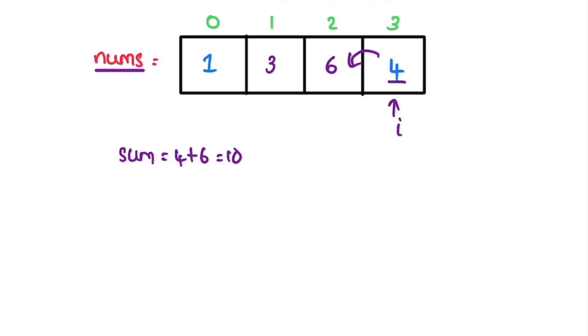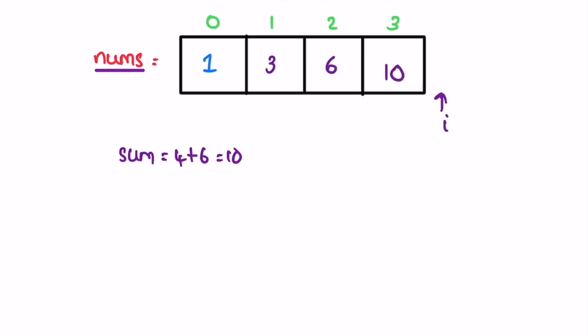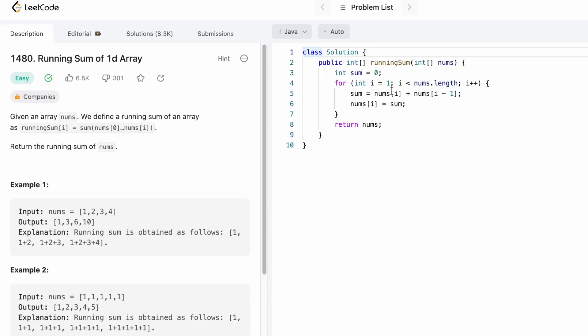We replace the current element with sum, so four becomes ten. Move the i pointer — now i has crossed the array's length, so we end the iteration. The original array nums will be returned as the output. Now let's implement these steps in a Java program.